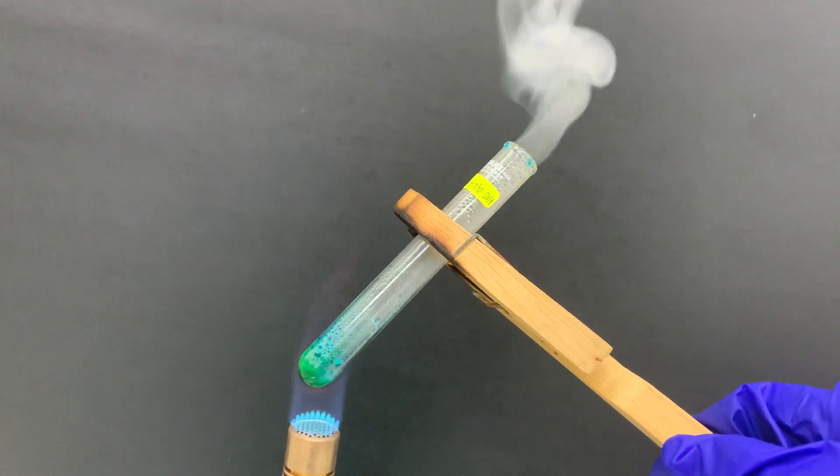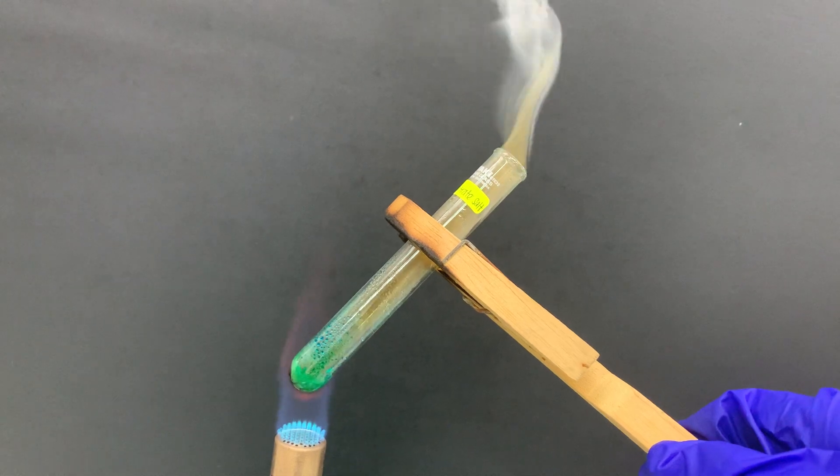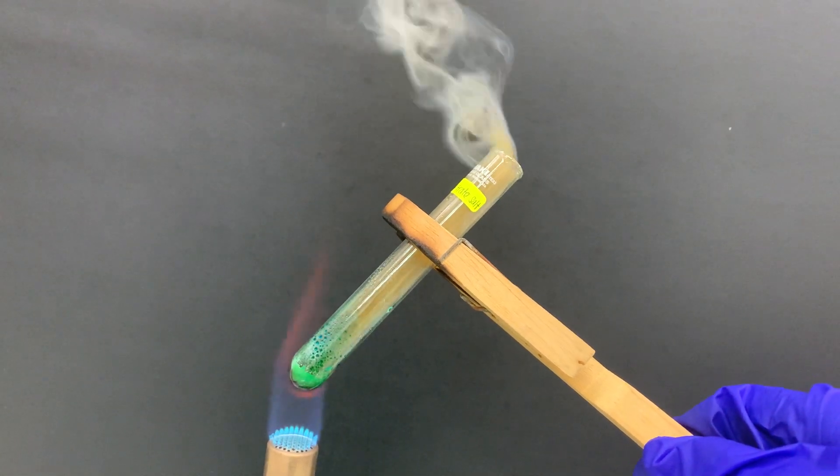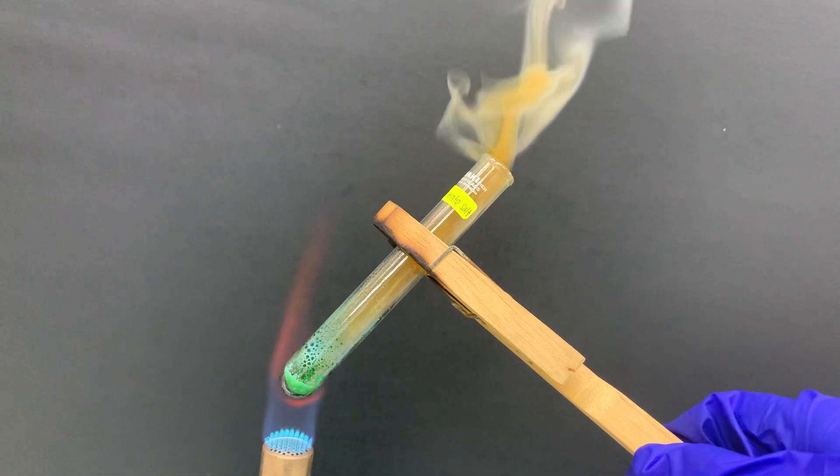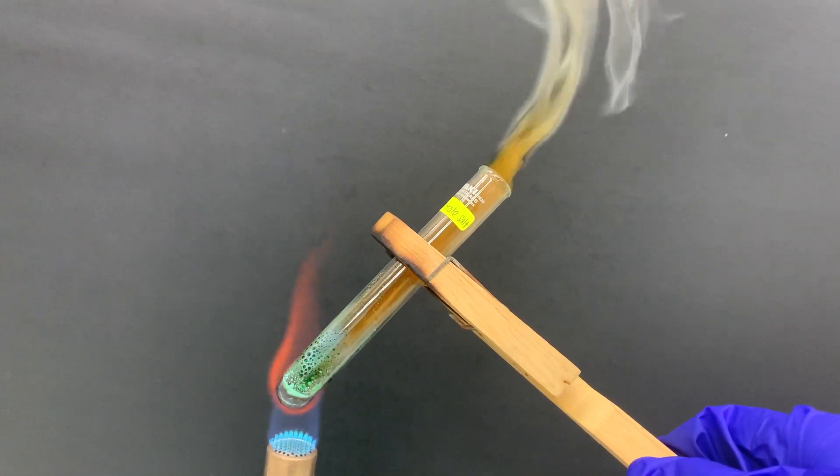But when you heat for a longer period of time, you can see the test tube change to brown color and a brown gas is produced. This brown gas is nitrogen dioxide.